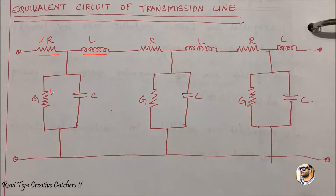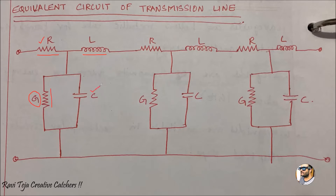This one looks somewhat similar to a resistor. Now tell me, what is this? We have seen this G — where have we seen it? In the fourth primary constant, we have seen conductance. This is conductance, which is a combination of both capacitors as well as resistance. G indicates conductance. And this one? Capacitor — this indicates capacitance.